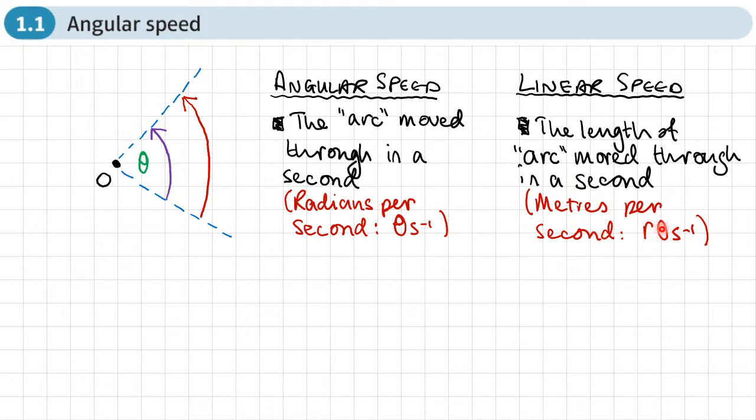Now the meters part, the length moved in a second, we can work out by working out this arc length, which would be the radius times by this angle subtended here. And this you would have learned in your pure two, how to find the arc length when you've got the radius and you've got the angle in radians.